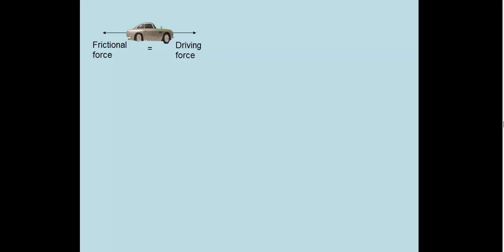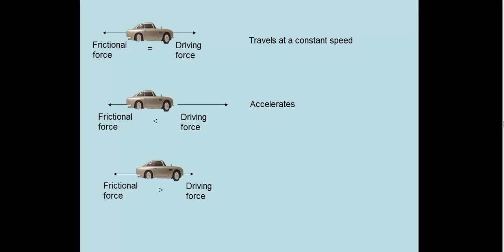Here we have a car where the frictional force is the same as the driving force. It will travel at a constant speed. Now the frictional force is less than the driving force. This car will accelerate. And here the frictional force is greater than the driving force, so this car will slow down.